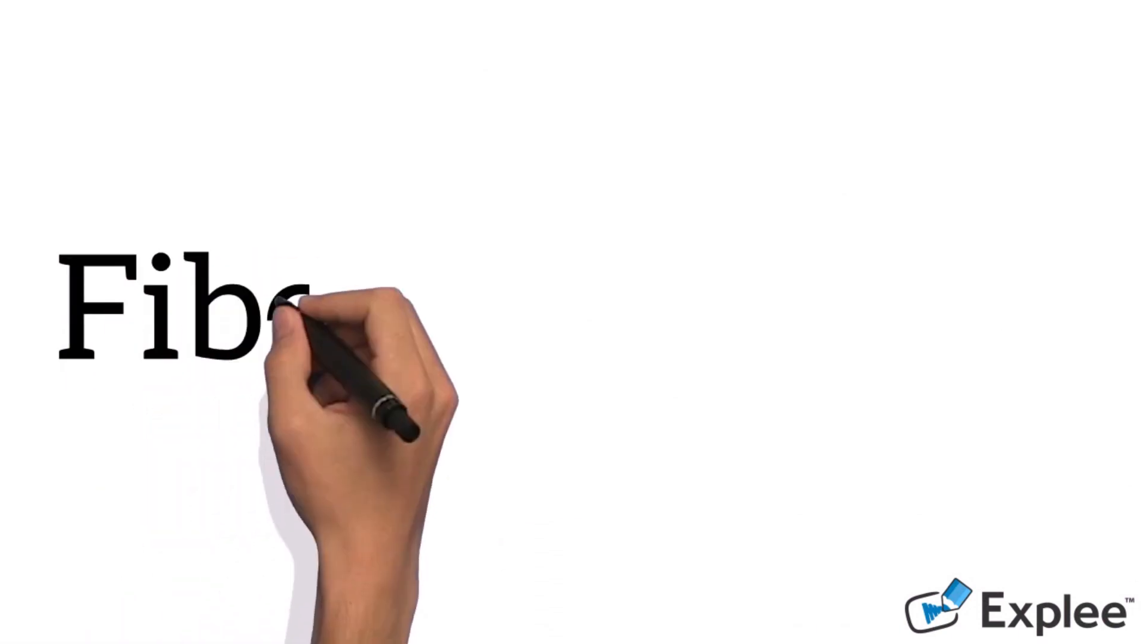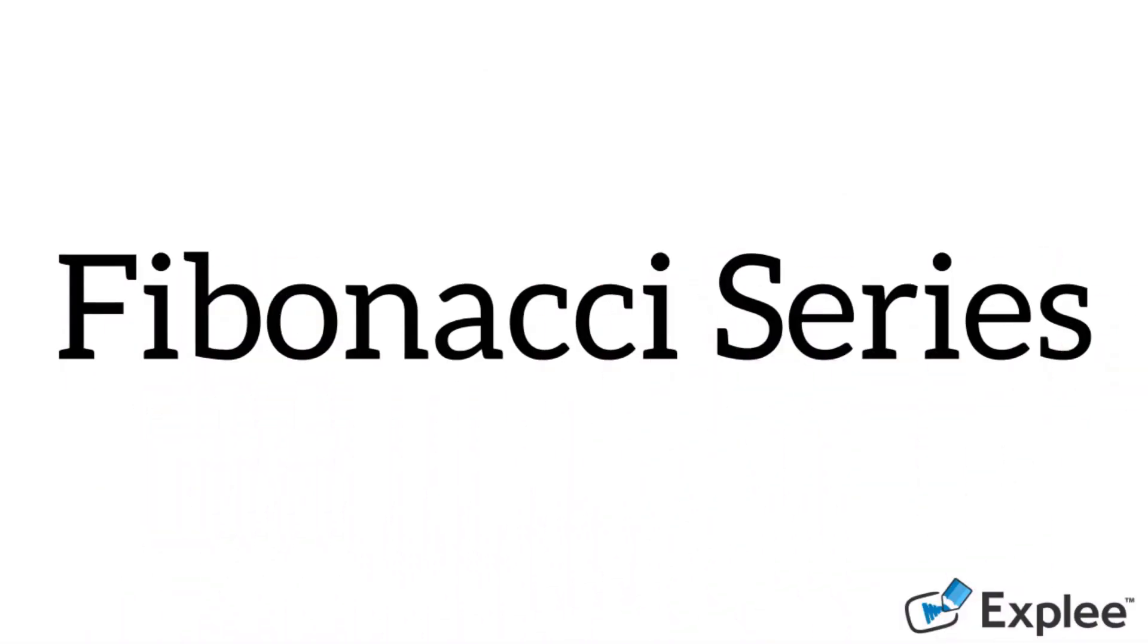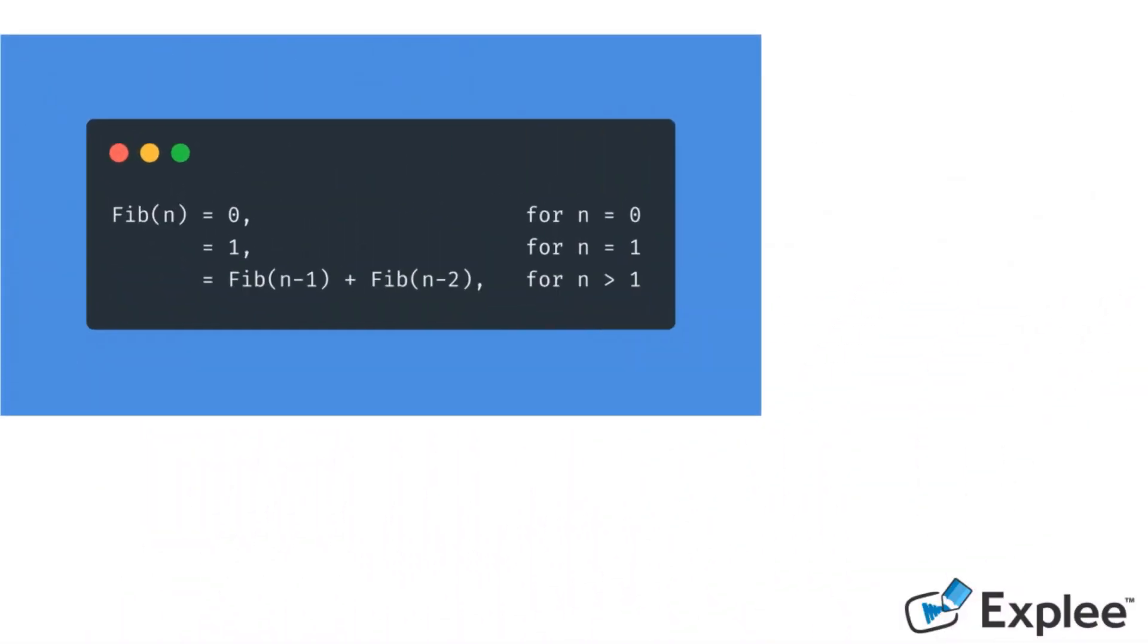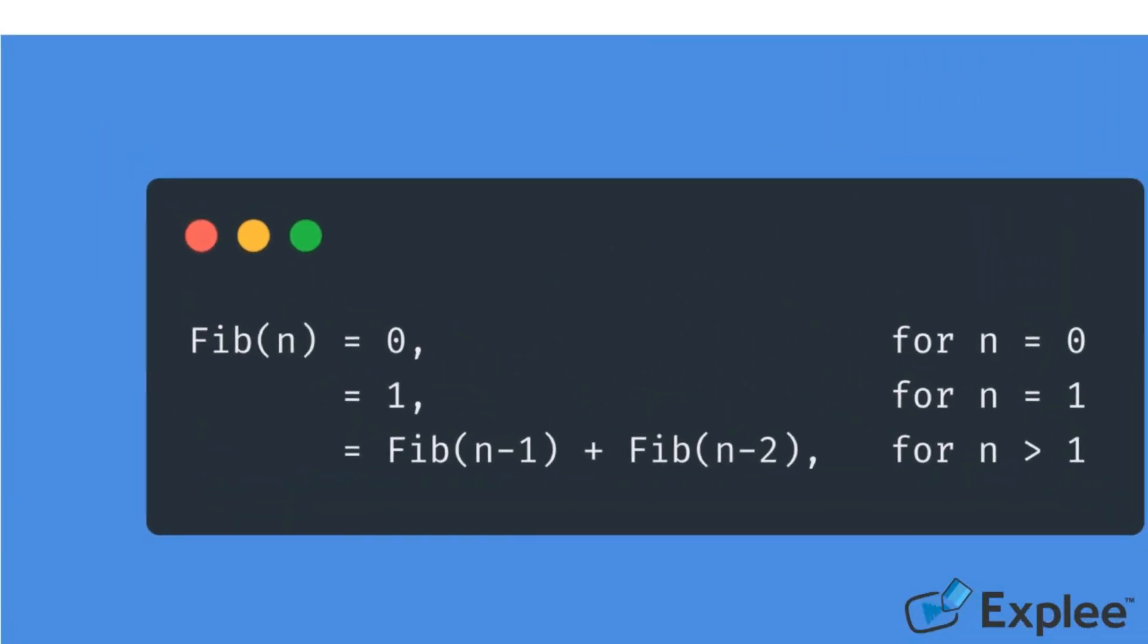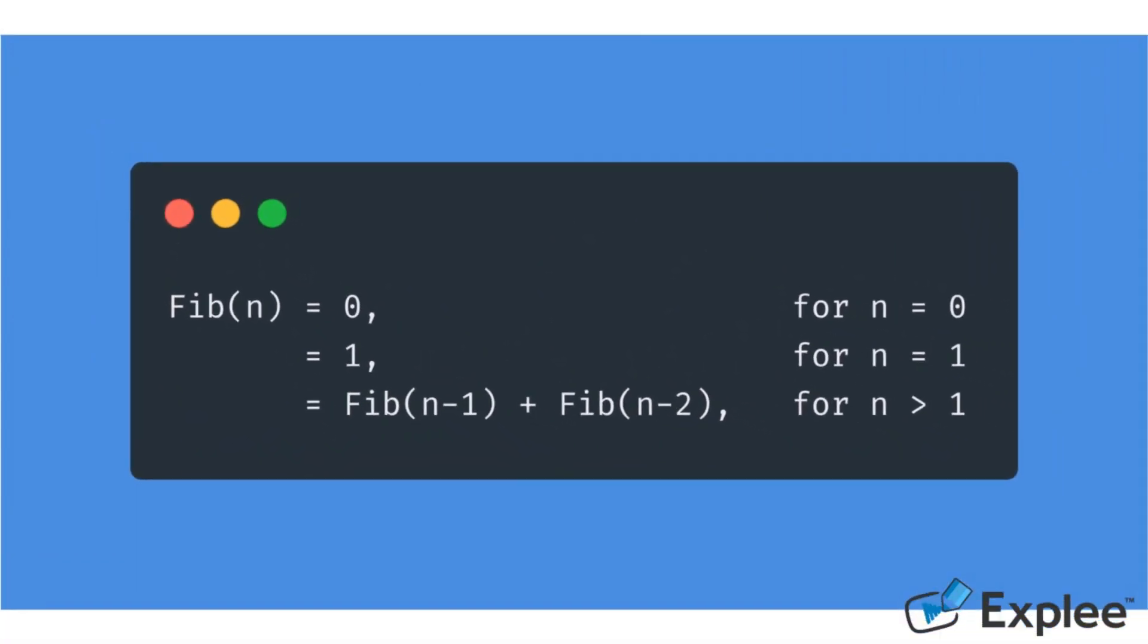Let's understand it using Fibonacci series. In Fibonacci series, the current number is the sum of previous two numbers. The Fibonacci series is defined as follows.